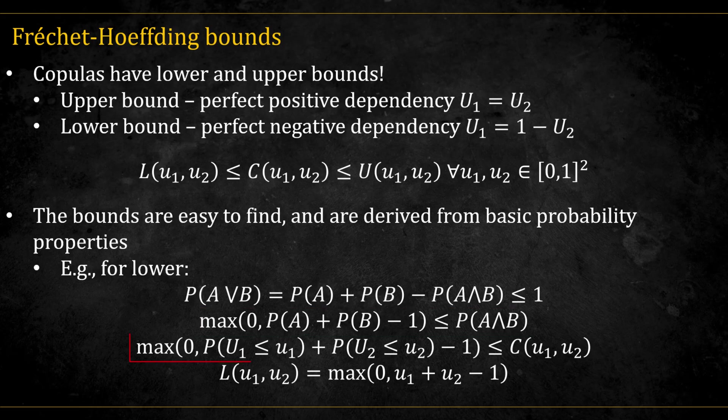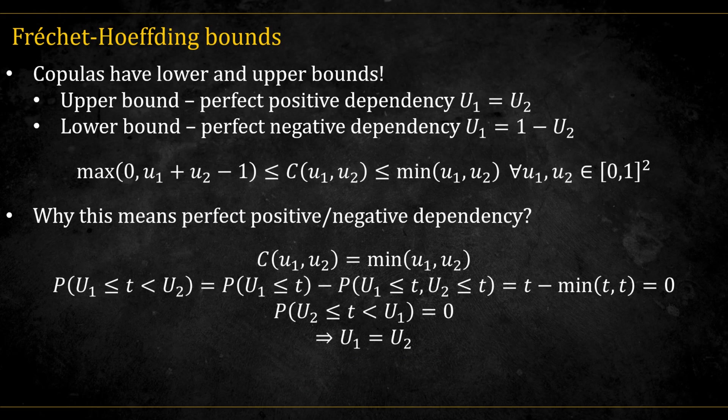Plugging in the actual probabilities of the copula, we get this. And since the marginals of copulas are uniformly distributed, we get this. The upper bound is equal to this. And I leave the proof for the upper bound as homework for you guys. These bounds are known as the Fréchet-Hoeffding bounds.